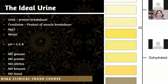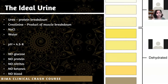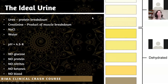Ideal urine has a pH of about 4.5 to 8. Urine should not have any glucose, protein, nitrites, ketones, or blood. This is our whistle-stop tour through renal physiology. If we can understand what actually goes on in the kidneys, we can easily navigate through pathology or clinical symptoms that come through our doors.